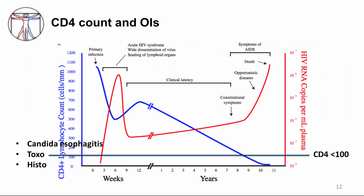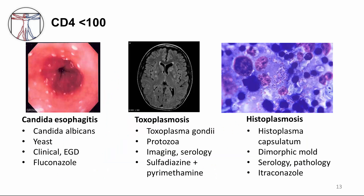Opportunistic infections that occur with increasing frequency when CD4 count is less than 100 include candida esophagitis, toxoplasmosis, and histoplasmosis — generally reactivation of histoplasmosis. On the west coast, coccidioidomycosis can also be seen. These are some of the images and disease characteristics of these OIs, which occur with CD4 count less than 100.